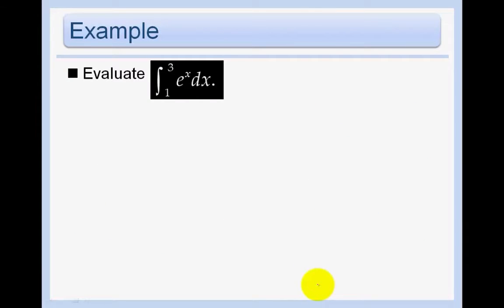So in this example here, we again need to take the antiderivative of the function e to the x. And the antiderivative of the function e to the x is just e to the x. So I'll walk you through how I write it. The antiderivative of e to the x is just e to the x. And we want to evaluate this between 1 and 3.